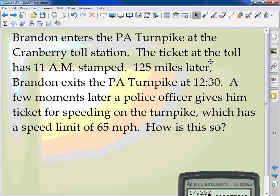Brandon enters the PA Turnpike at the Cranberry Toll Station. The ticket at the toll has 11 AM stamped. 125 miles later, Brandon exits the PA Turnpike at 12:30. A few moments later, a police officer gives him a ticket for speeding on the Turnpike, which has a speed limit of 65. How is this so? The cop was not following him. The cop was just sitting at the exit. At the first thing, he paid his ticket, he pulled him over.